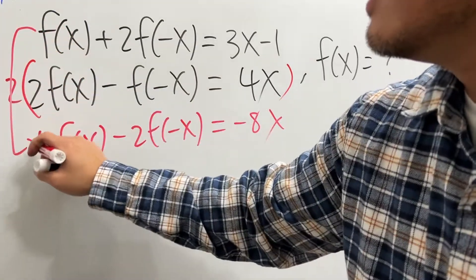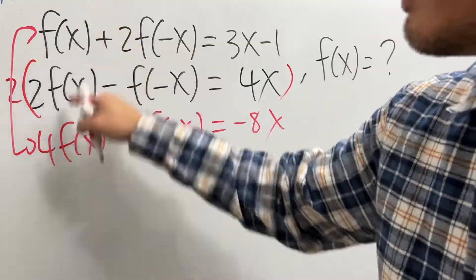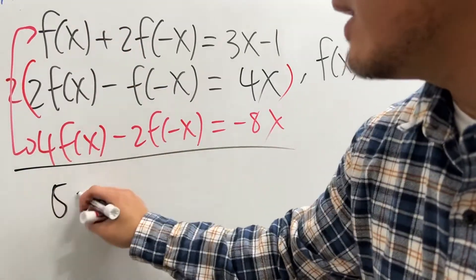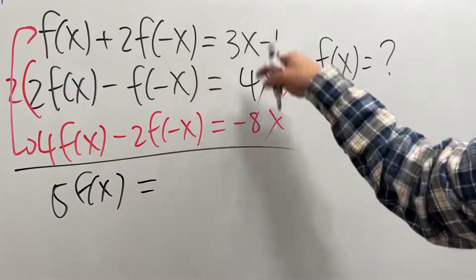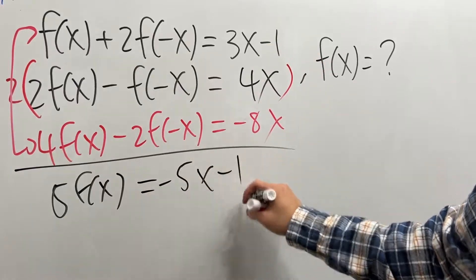And I'm going to just combine these two together. So add them up. This plus that is going to give us 5f(x), and that's going to be cancelled out. And that's equal to -5x - 1.